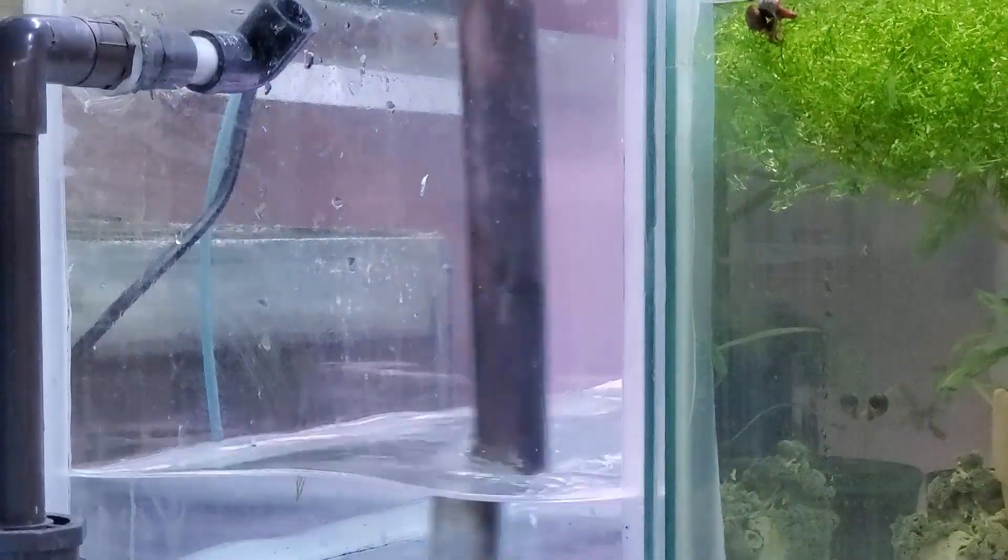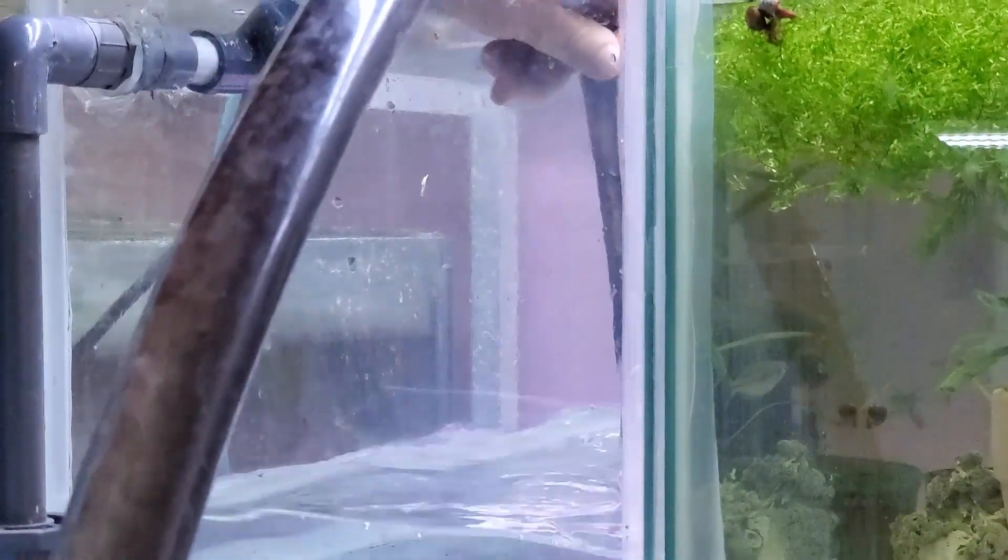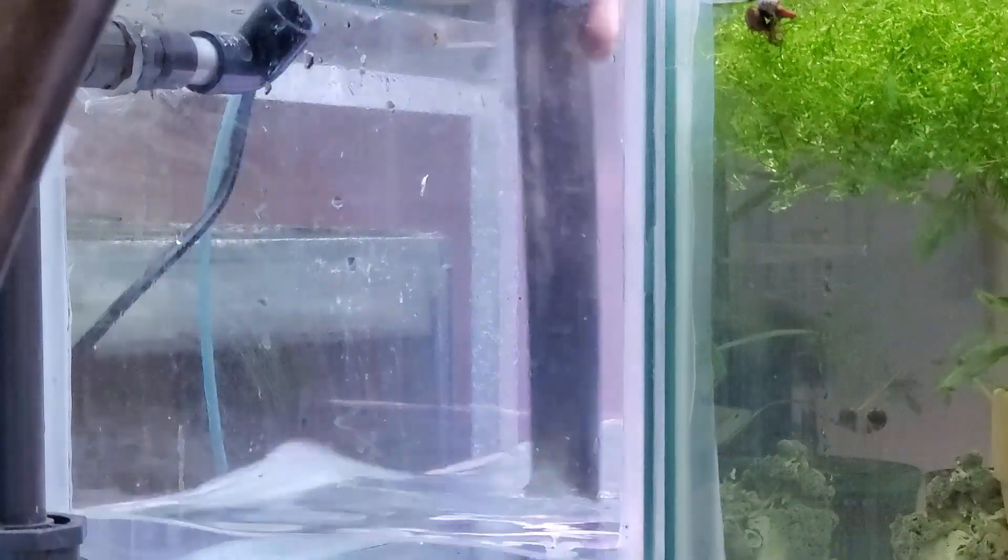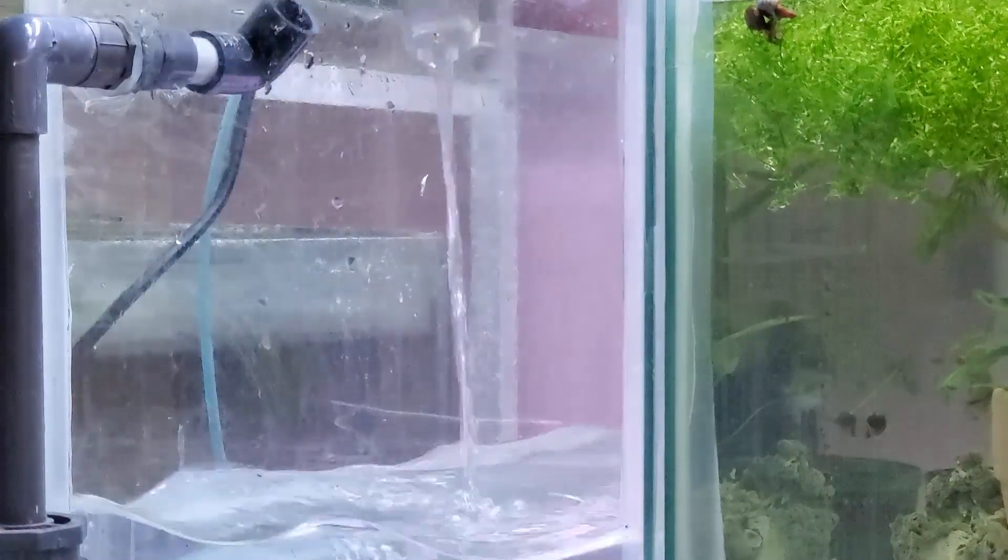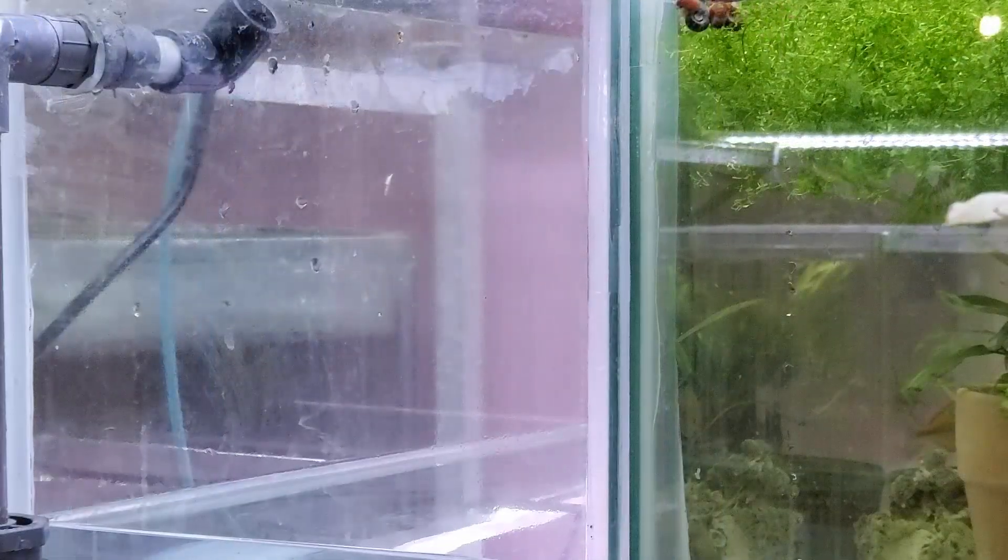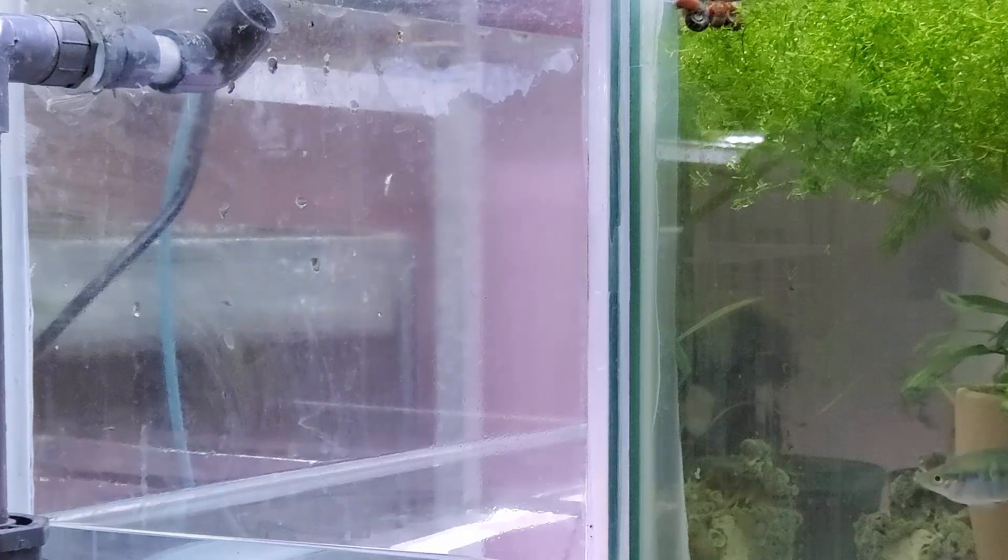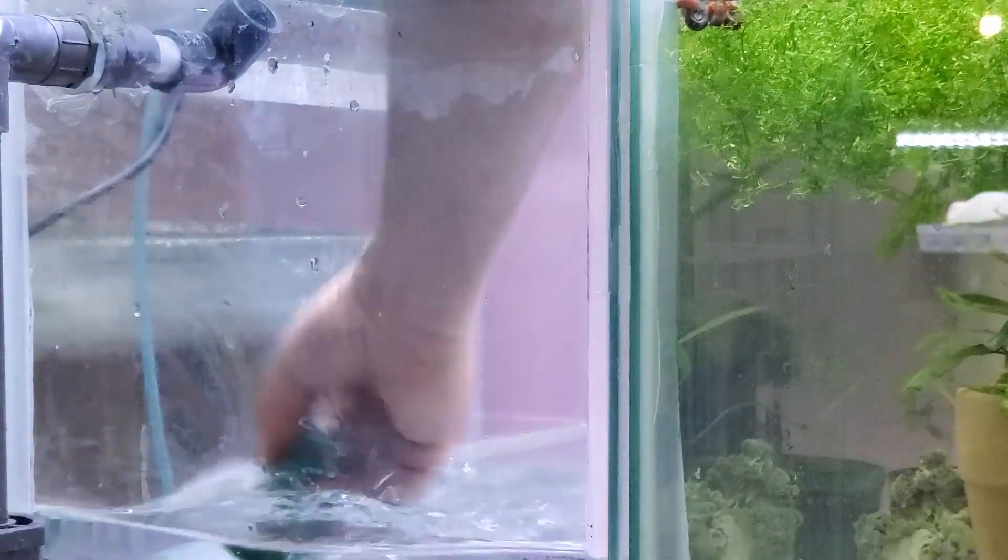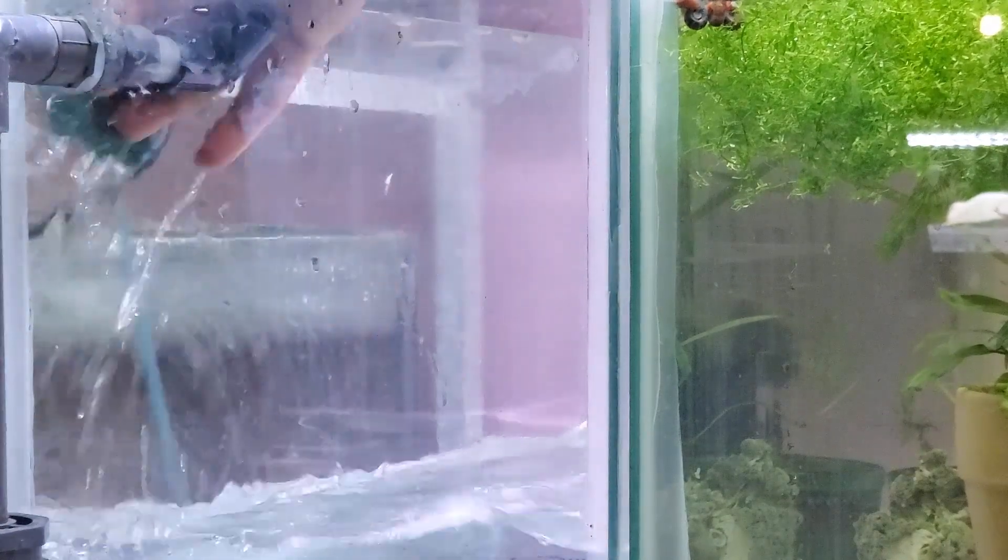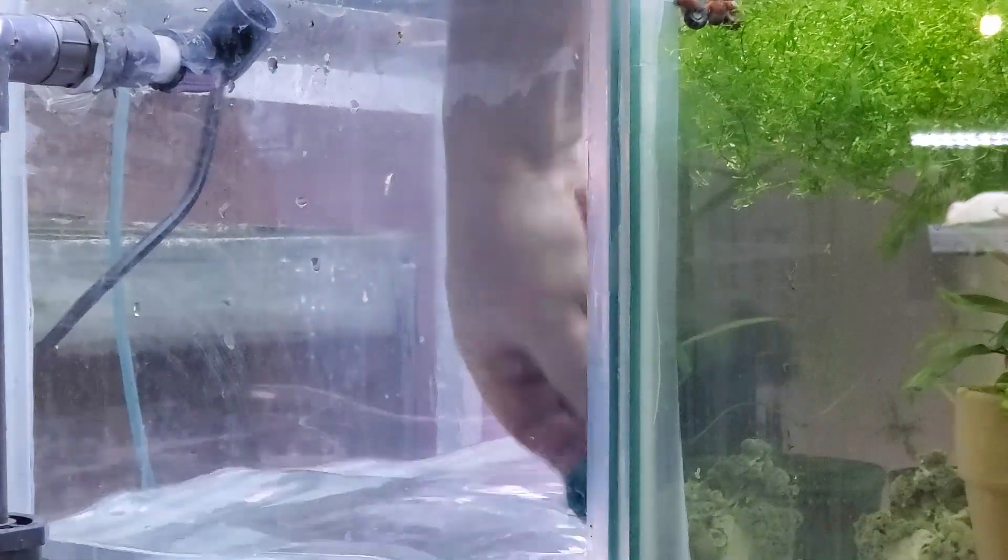I have a box filter that's been in an aquarium for quite some time, so the biomedia should be fully cultured—a nice mature filter. That will be my zero point. Then at regular intervals I'm going to test for ammonia until it reaches zero, and that will be my benchmark.